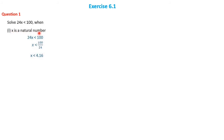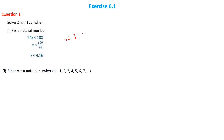When x is a natural number: natural numbers are the set {1, 2, 3, 4, ...}. Since x < 4.16, and natural numbers have no decimals, the last natural number before 4.16 is 4. So the solution is {1, 2, 3, 4}.